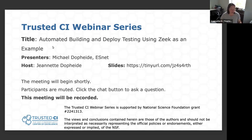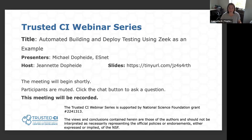More information about Trusted CI can be found at trustedci.org. Today's topic is automated building and deploy testing using Zeek as an example, with Michael Dopp-Heidi. Dopp is a senior security engineer at ESNet.